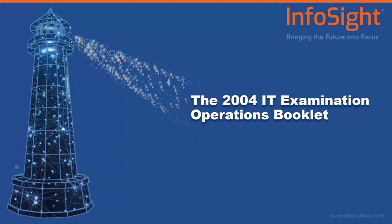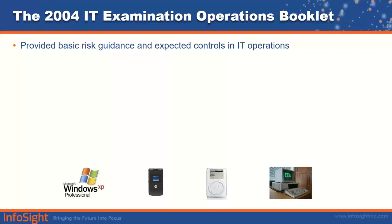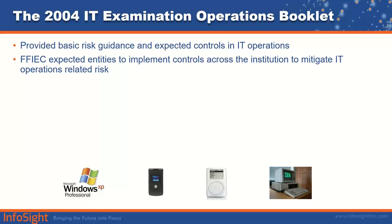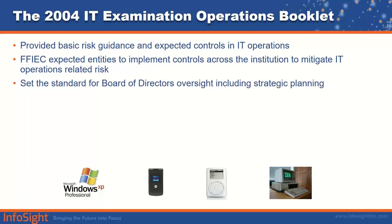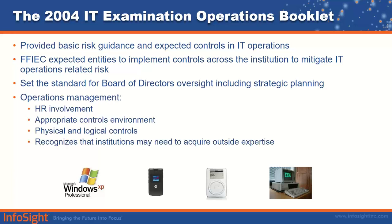Sometimes to understand where we're going, we have to understand where we came from. Let's do a quick review of the 2004 operations booklet. When this booklet was created in 2004, Windows XP started to dominate, and flip phones competed with computers for the attention of teenagers. The original booklet set the standard for risk control guidance in IT operations. The FFIEC expected entities to implement controls to mitigate IT-related risk, set standards for board and executive management oversight of IT operations, and covered operations management from HR involvement through physical and logical access controls.